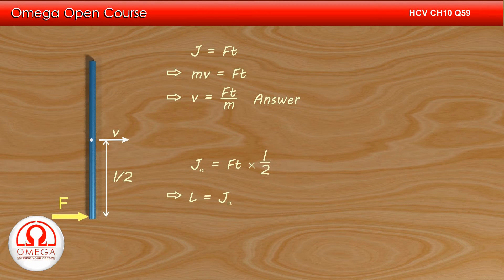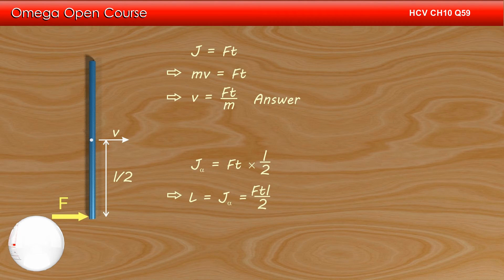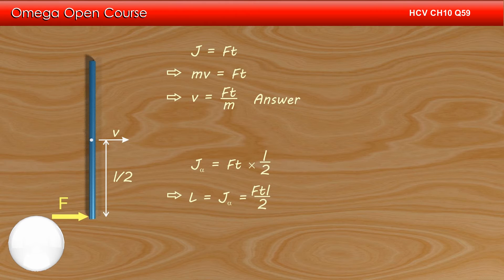The angular momentum of the rod about the center of mass must be equal to this angular impulse. Hence, the angular momentum of the rod about the center of mass is FTL by 2. This is the answer to part D of the question.